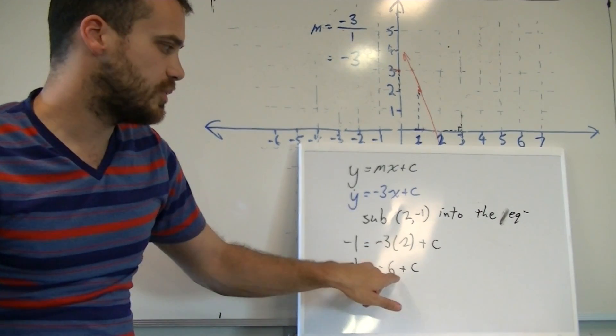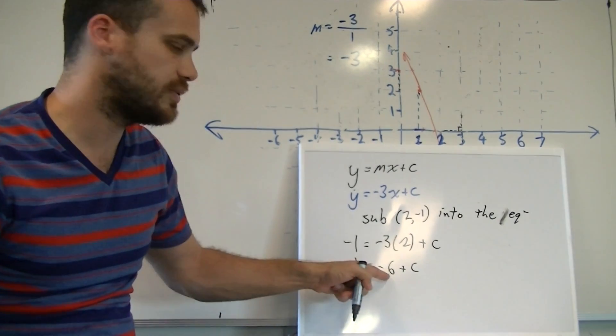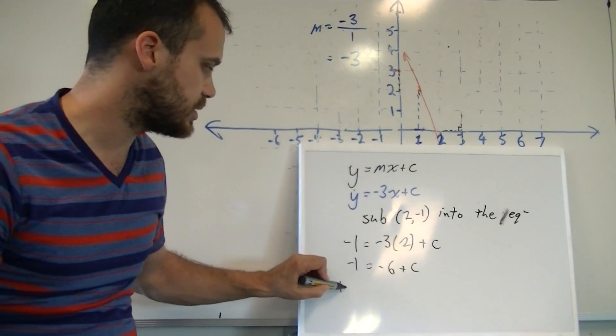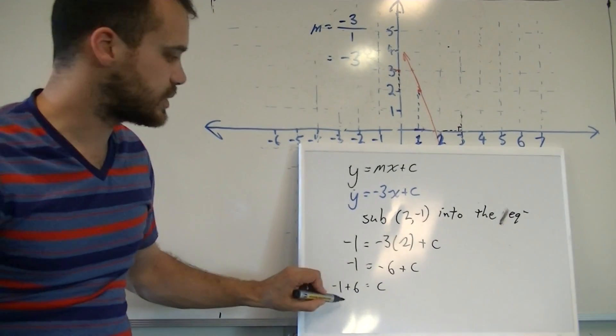Now we just need to move that negative 6 to the other side so we can isolate c. Negative 1, negative 6 moves over, it becomes positive 6. Negative 1 plus 6 is 5.